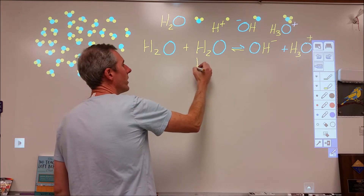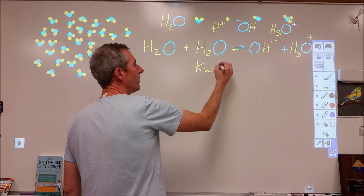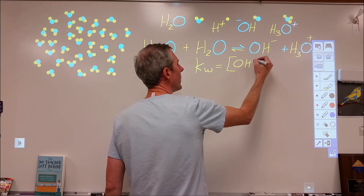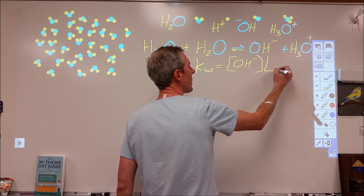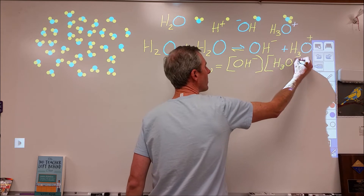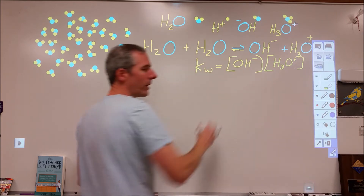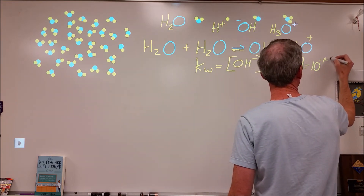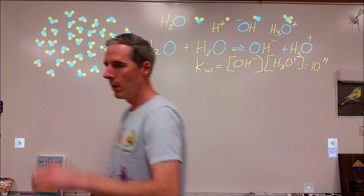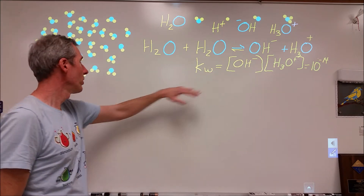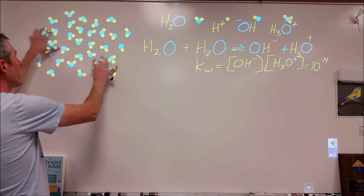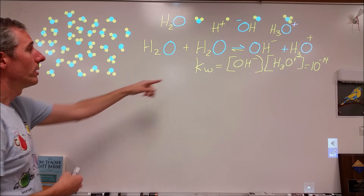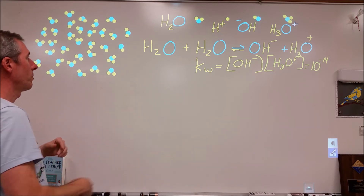From equilibrium, we can write an equilibrium expression for water. Since these are liquids, we ignore them in the expression, leaving us with: the hydroxide concentration times the H3O+ concentration. At room temperature, this equilibrium constant Kw is equal to 10 to the negative 14. As we change temperature, that can change slightly — because the particles move faster, the rates of the two processes change — and the equilibrium constant actually gets larger as temperature goes up.